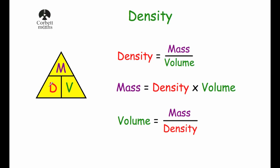In the triangle we've got density, mass, and volume. You just cover up what you're looking for. For instance, if you want to find the density, cover up D and you get mass divided by volume. If you want the mass, cover up M and you do density times volume. And if you want the volume, cover up V and you do mass divided by density.